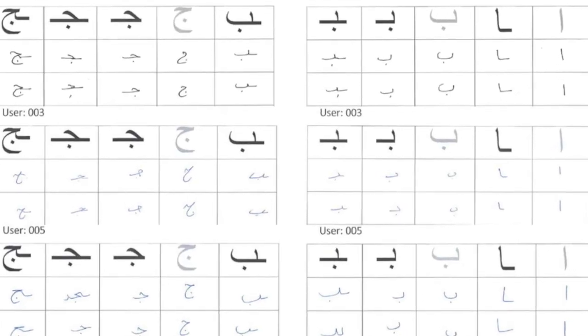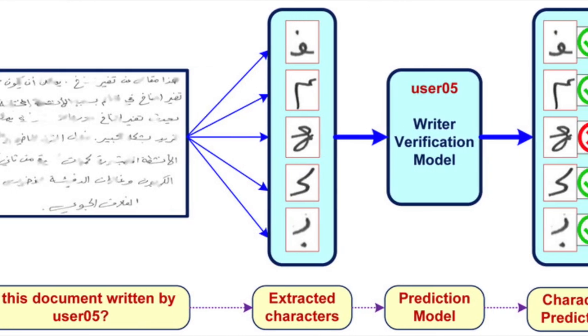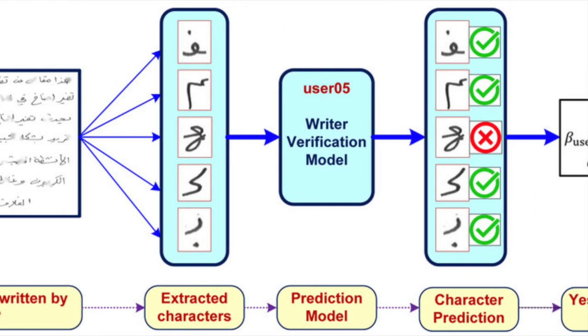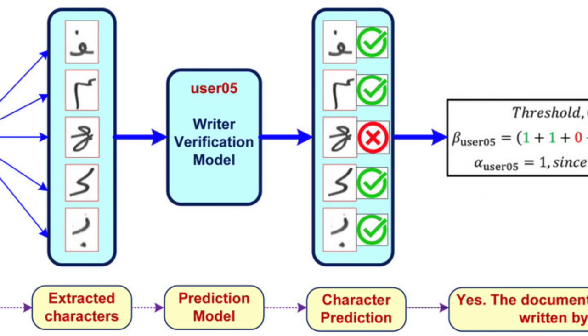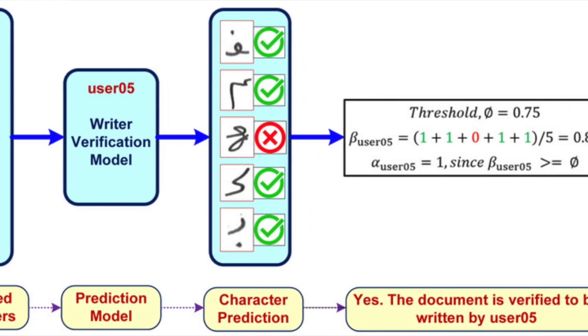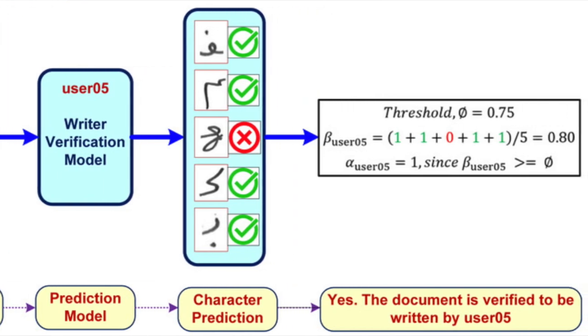Our approach was to identify character shapes — the expected character shapes from the handwritten text — and then use those character shapes to verify the authorship of the document. Since we were doing it based on character shapes, which can be very similar across multiple writers, it becomes more challenging than using complete sentences or words, because multiple people will write the same character the same way, so you have to look for more specific features.